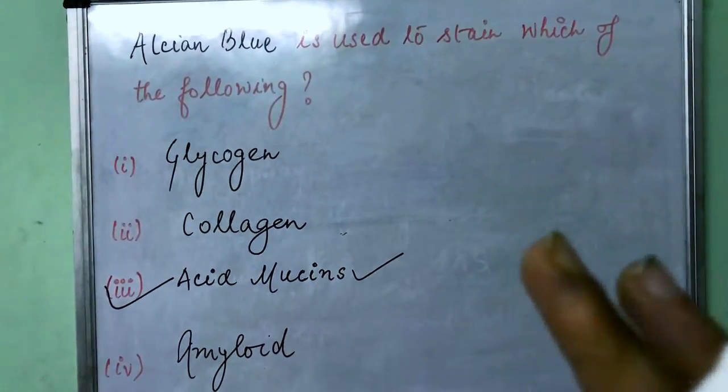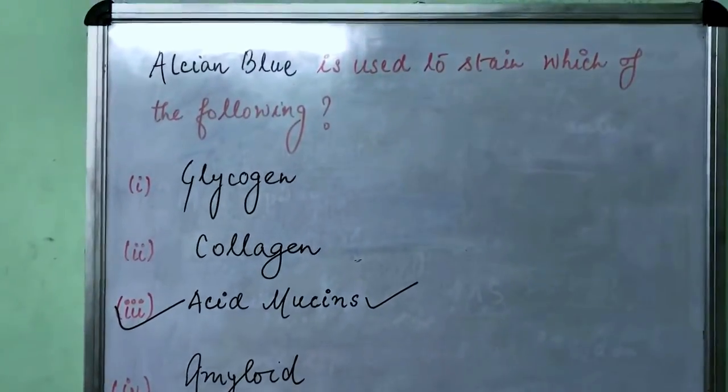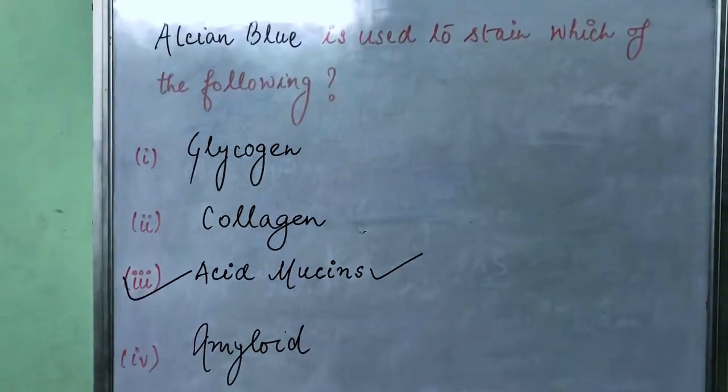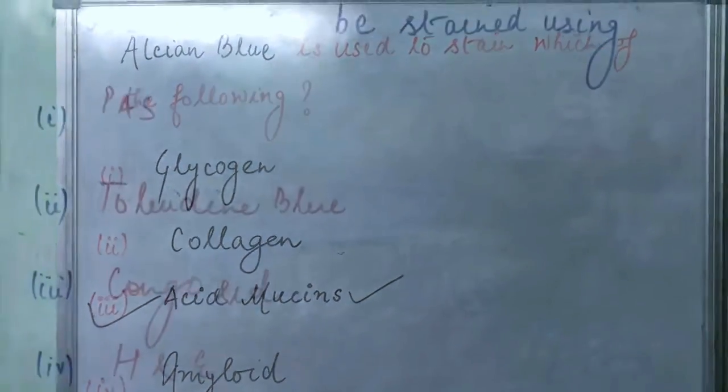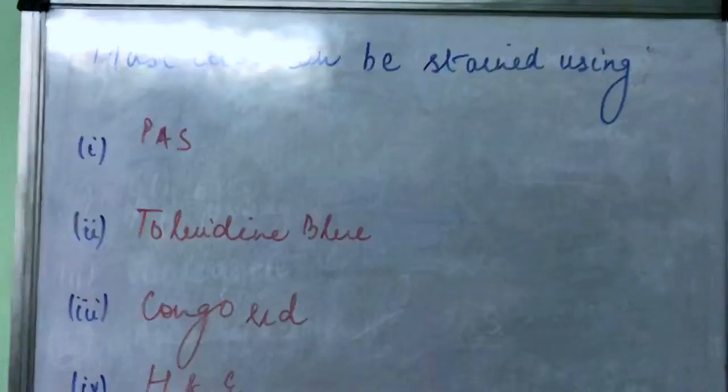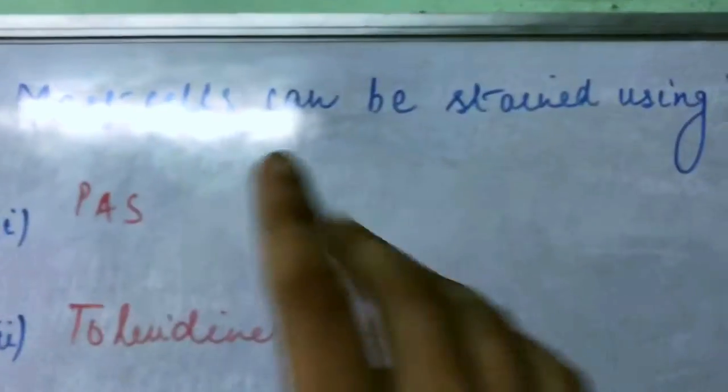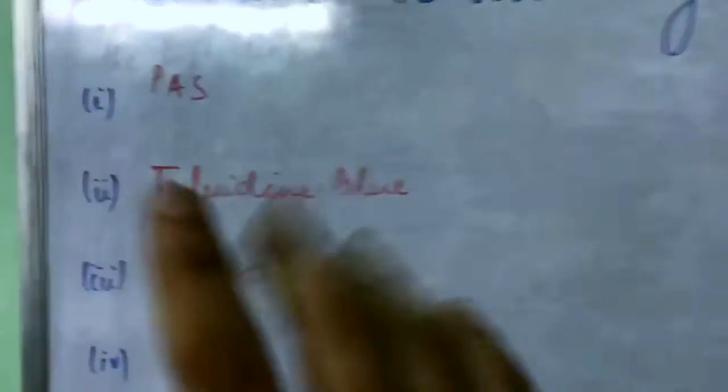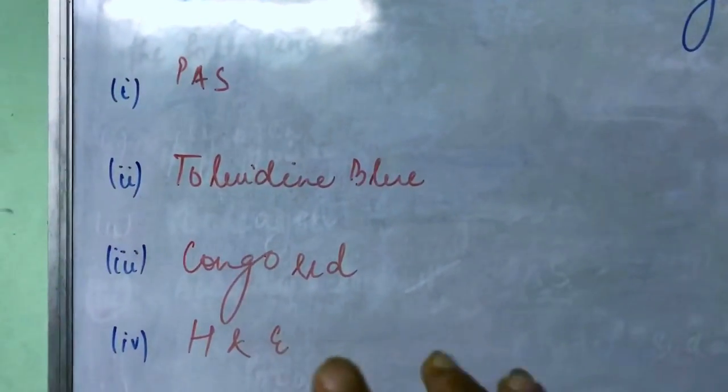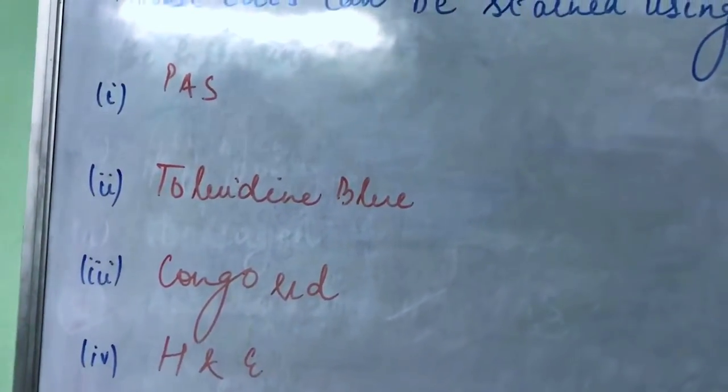And this was not the only question that was asked from stains in AIIMS May 2018. Another question was: mast cells can be stained using which of the following? And the options were PAS, toluidine blue, Congo red, and H&E.